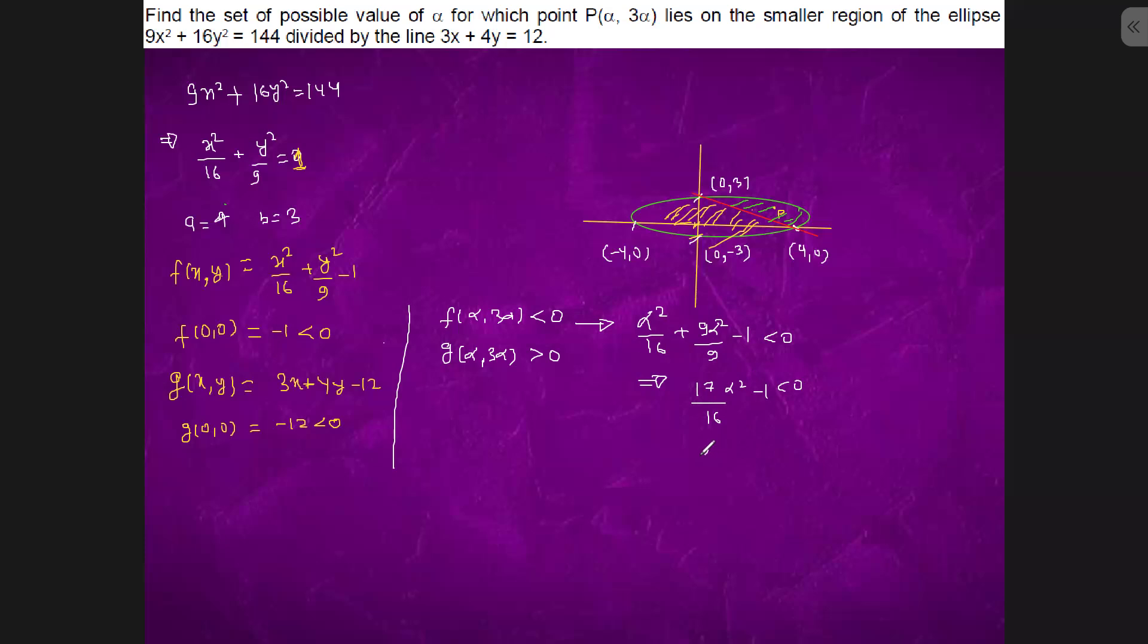So we come to know α belongs to (-4/√17, 4/√17).